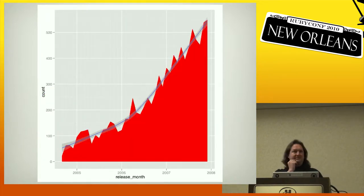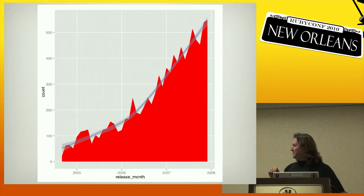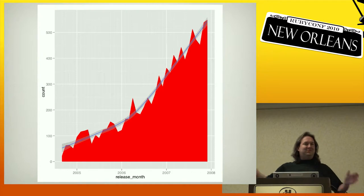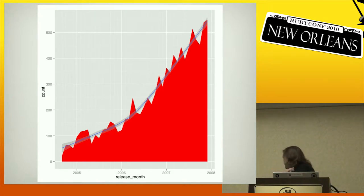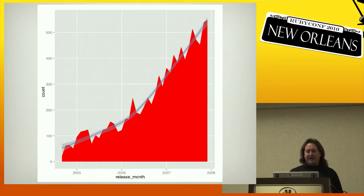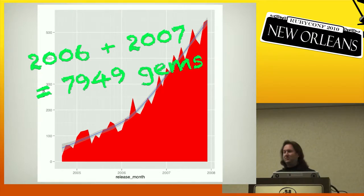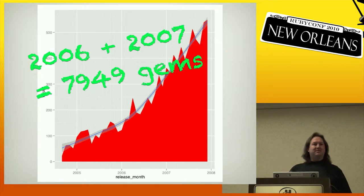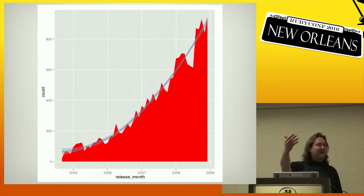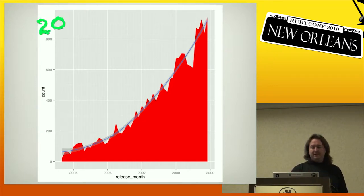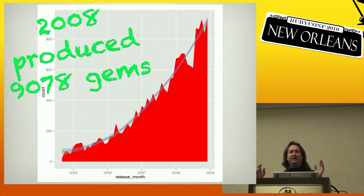Let's go to 2008. We extend this graph — now it's by month — and it's been taking off. Between 2005 and 2008 we're approaching 500 gems published per month by end of 2007. Between 2006 and 2007 we have 7,949 gems, as opposed to the 1,500 from the previous two years. We add 2008 to the mix and it's just skyrocketing — 2008 on its own had 9,000 gems. Every single year we're getting more and more.